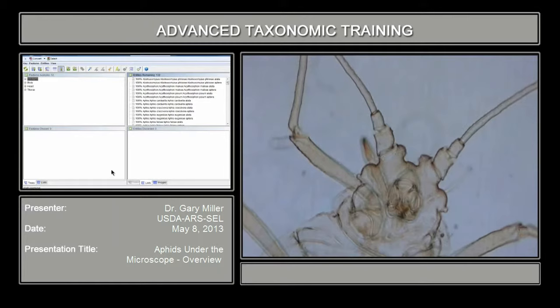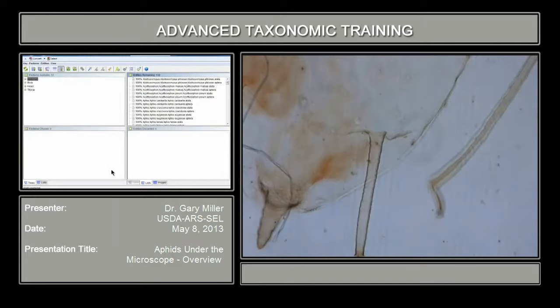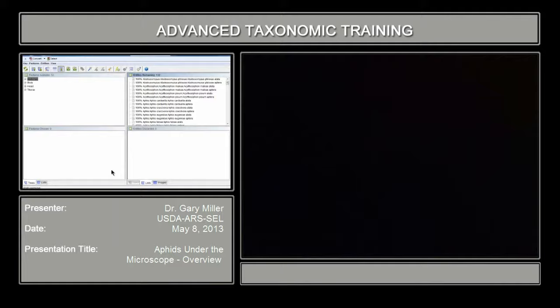If you can remember what we looked at with Aphis gossypii, you can see that in this case Myzus persicae — the green peach aphid — while aphid-like obviously, scrolling down here we have the siphunculi and the cauda, but you'll see some differences in the structures in the head region. Most notably are those frontal tubercles — I'm going to zoom in to get a better look at those.